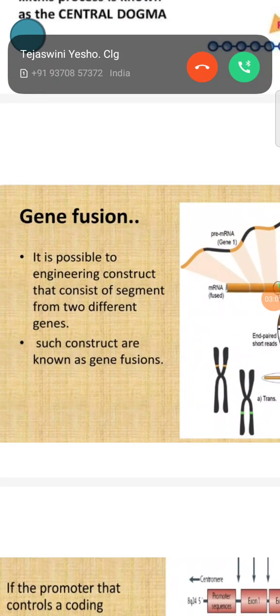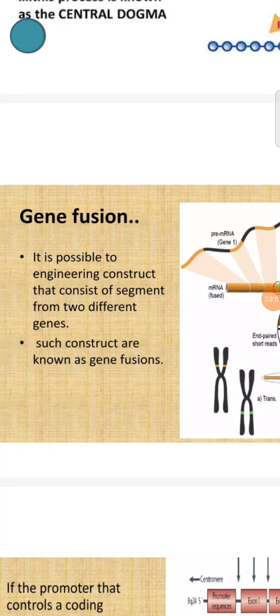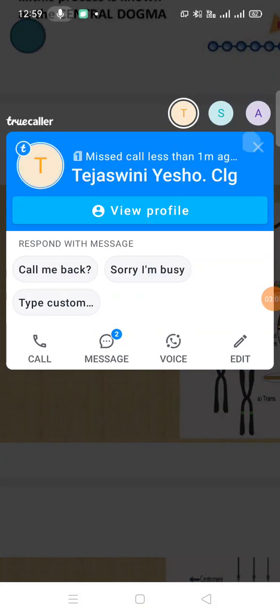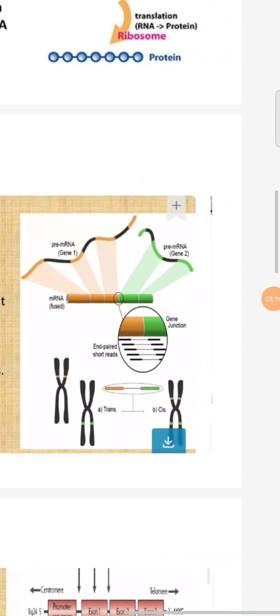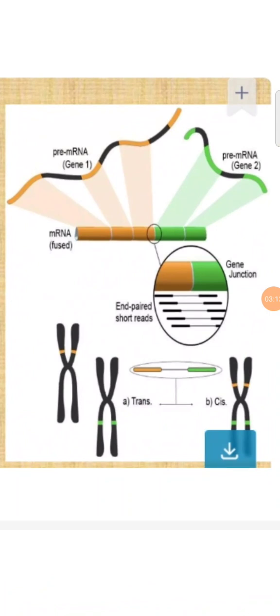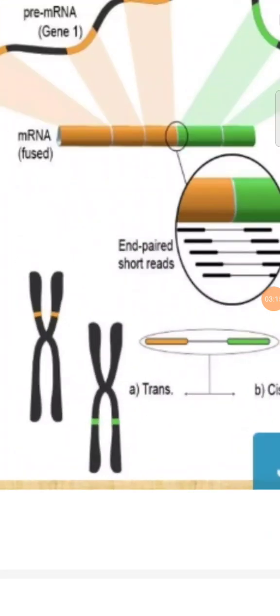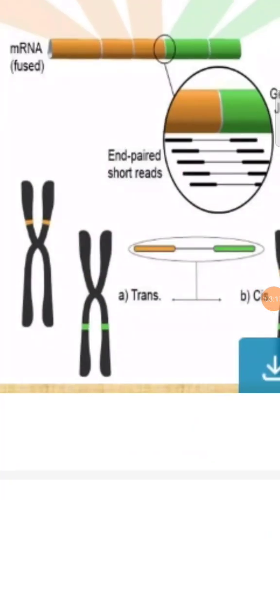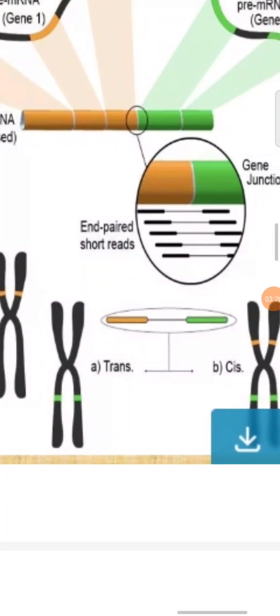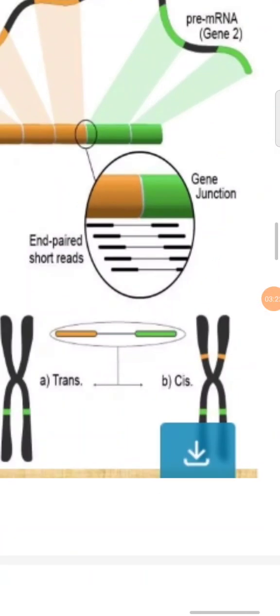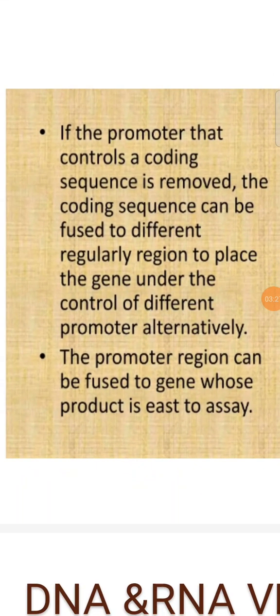Gene fusion makes it possible to engineer constructs consisting of two different genes; such constructs are known as gene fusions. Gene fusion is carried out into the chromosome, which has trans and cis sides. The green part represents the telomere and short leads, and mRNA is at the junction known as the gene junction.